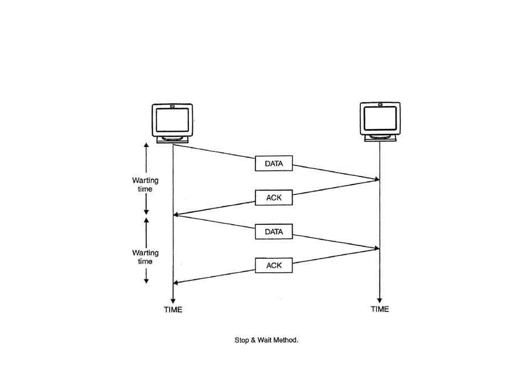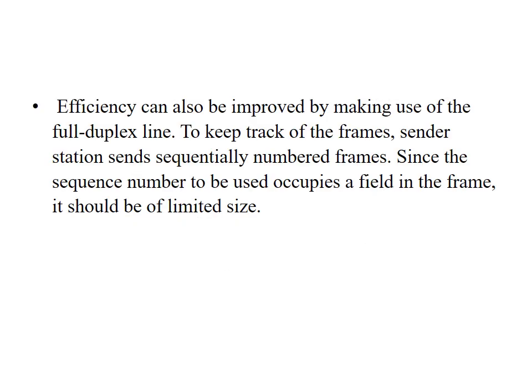This can also be achieved through the full duplex method. In full duplex, the sender and receiver can send data in both directions. The sender sends data, and immediately the receiver can send an acknowledgement back. If the receiver is willing to accept more data, the sender immediately sends the next data — this bidirectional communication is called full duplex. To keep track of frames, sender stations use sequential numbering, and since the sequence number occupies a field in the frame, it should be of limited size.